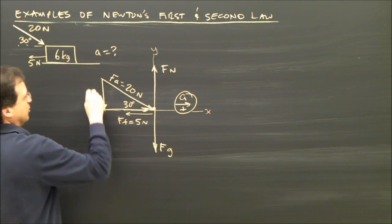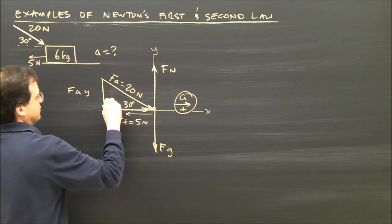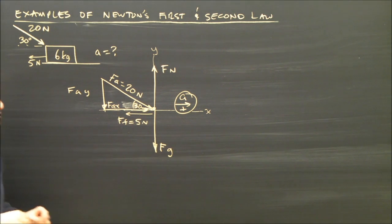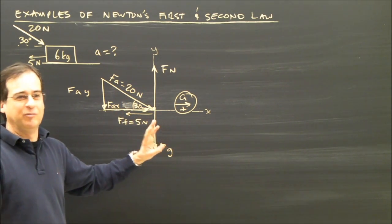And this is—I'm running out of room—this is Fay, and this is Fax. I'm going to move the 30 over there, 30 degrees. Alright, now let's look at the relative sizes of them because it's important that a free body diagram look correct.